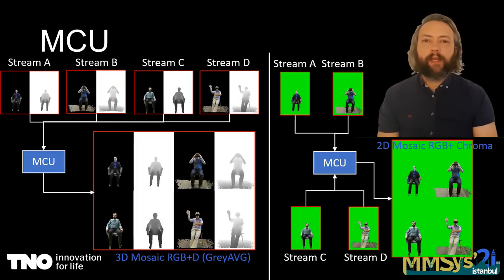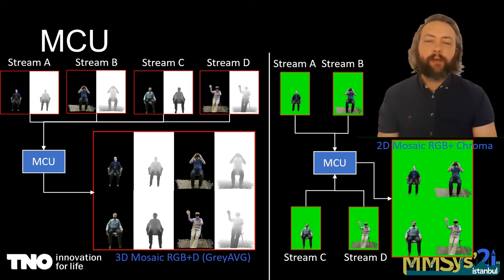This can be served in two flavors. On the left you have color and depth as grayscale. On the right is a chroma format where the background is replaced with a chroma color — no depth information, so users cannot be rendered in 3D but can be rendered as transparent sprites, which is particularly interesting for 360-degree experiences where depth is not present.